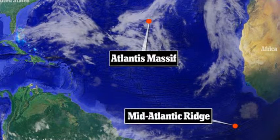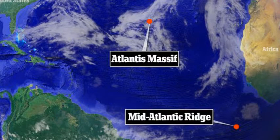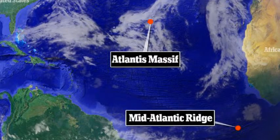Rock samples from an underwater mountain in the Atlantic Ocean could help to explain how early life formed on Earth, or on other planets.